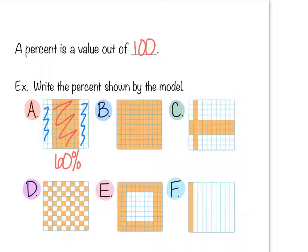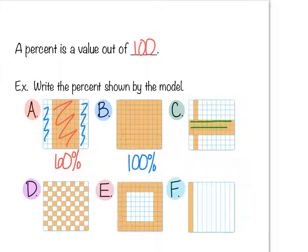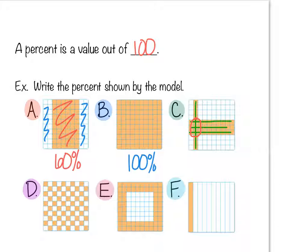In example B, every single square is shaded, so we have 100 percent. In example C, this one's tricky — we've got three rows fully shaded, so that's 30. If we count a fourth partial row that's 40, but we'd have counted three squares twice. So if we have four rows and take away the three squares counted twice, that makes it 37 percent.